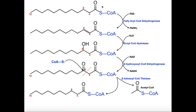In beta-oxidation, there are four enzymes, at least when we're talking about saturated fatty acids. When we have a saturated fatty acid with an even number of carbon atoms — such as 12 — it will simply undergo these four reactions in a cycle over and over again. Each cycle will reduce the number of carbon atoms by two, and at the end of every cycle we should be getting acetyl-CoA.